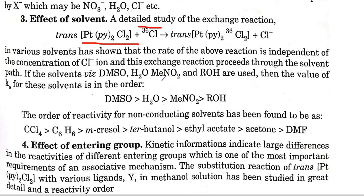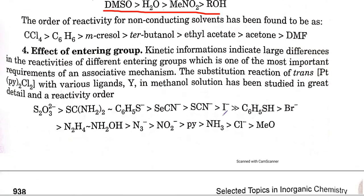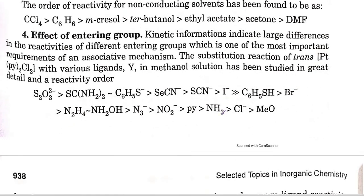For non-coordinating solvents, the order of reactivity is: chloroform, tetrachloromethane, chloromethane, then hexane, cyclohexane, and tert-butanol at the other end. So solvent also plays a role in the reaction rate, and this is the most important factor for the associative mechanism requirement.